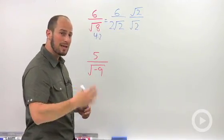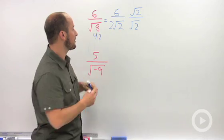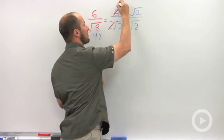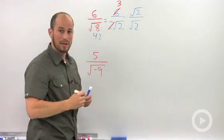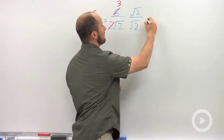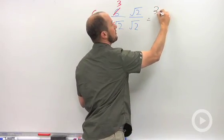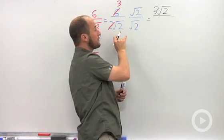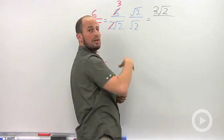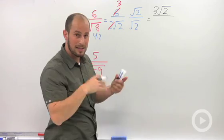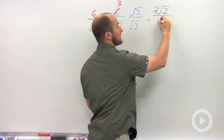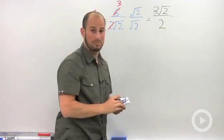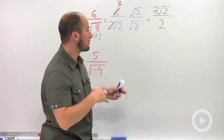Before I multiply that through, I can see that I can simplify this. We have 6 over 2. This is going to cancel, leaving me with 3. So we now have 3 root 2 in the numerator, and the 2 has gone away. We have root 2 times root 2. When you multiply them together, they cancel each other out, leaving us with what's inside, which is 2. So we ended up with 3 root 2 over 2.